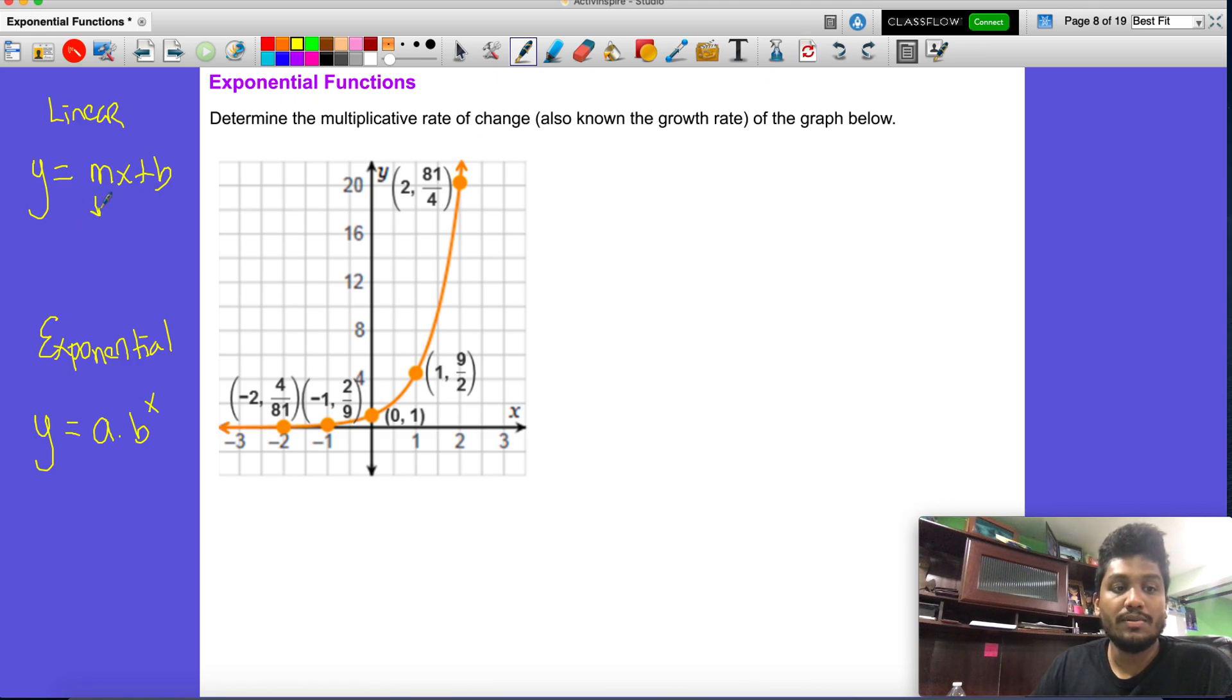This will be the slope. That's the rate of change for a linear function. For an exponential, this right here, this is a growth rate or the base. This is essentially the rate of change. What are you multiplying by every single time?